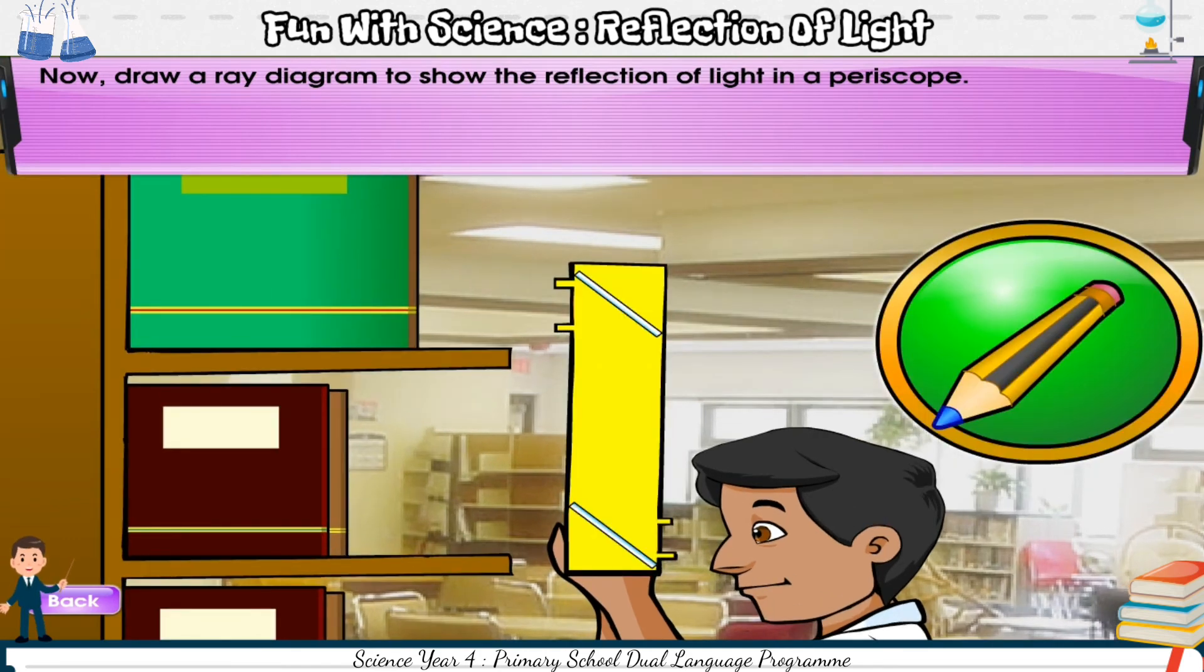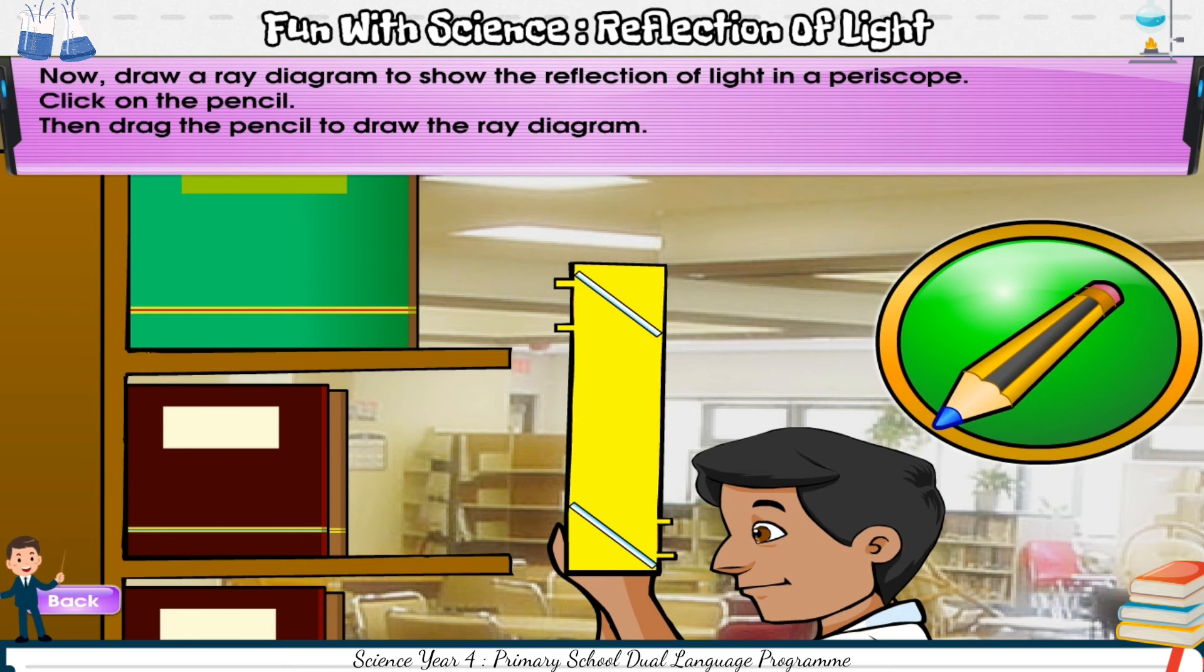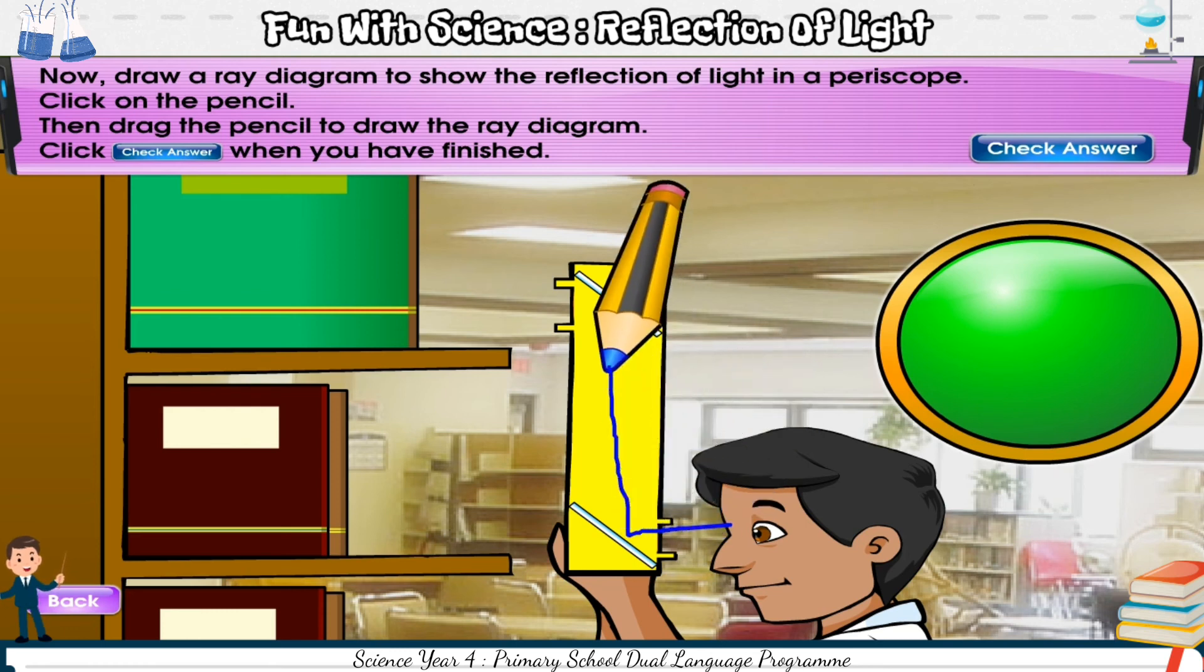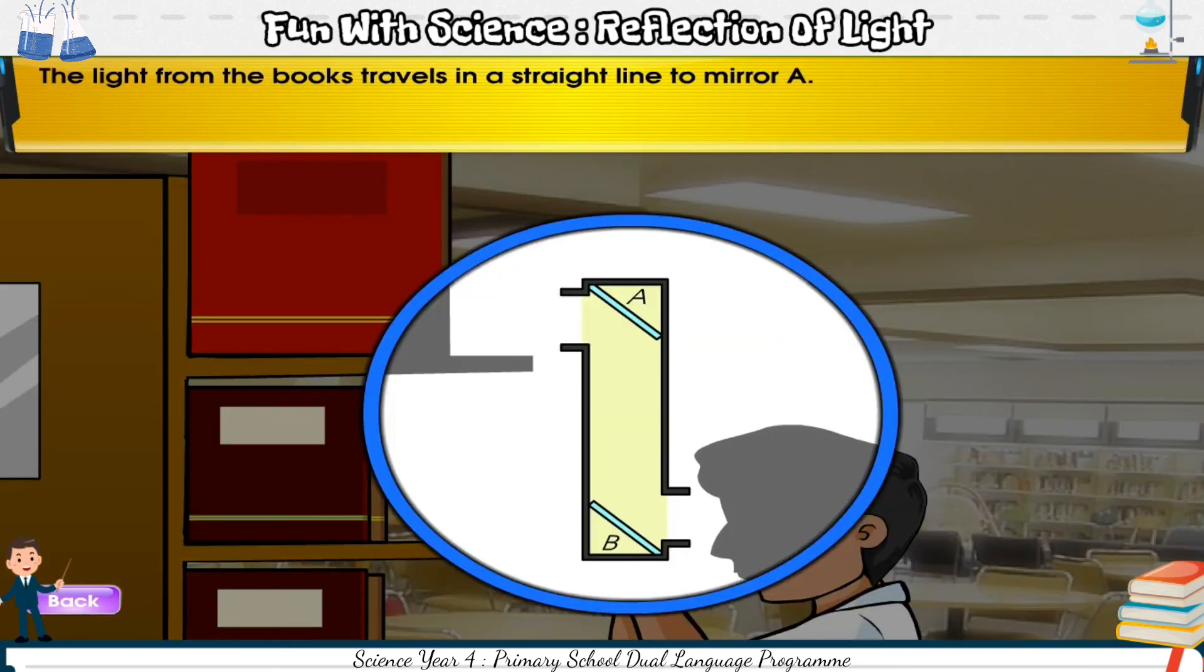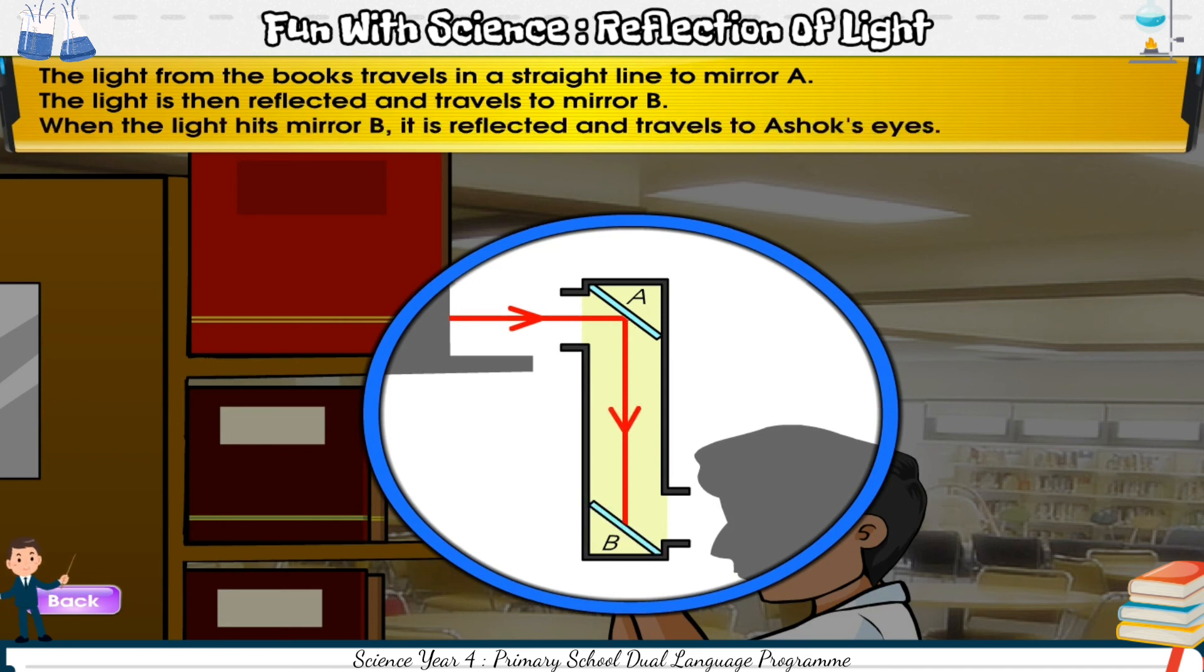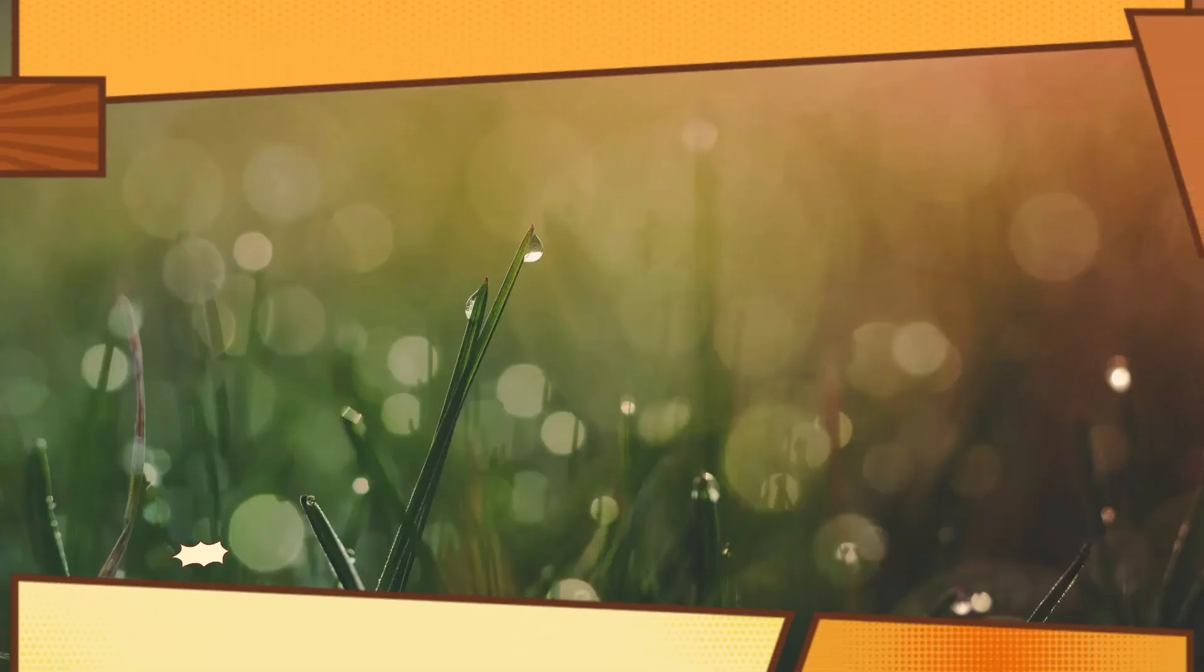Now, draw a ray diagram to show the reflection of light in a periscope. Click on the pencil. Then, drag the pencil to draw the ray diagram. Click check answer when you have finished. The light from the books travels in a straight line to mirror A. The light is then reflected and travels to mirror B. When the light hits mirror B, it is reflected and travels to Ashok's eyes.